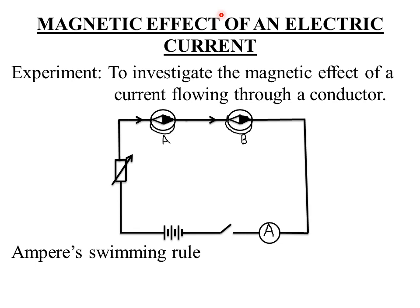Today we are looking at magnetic effect of an electric current, and we have a professor of physics called Hans Austin, who is the professor who discovered the magnetic effect of an electric current. He did discover that a conductor carrying current has a magnetic field around it.